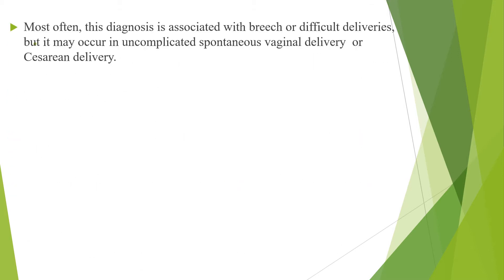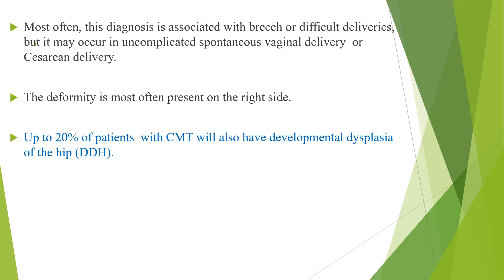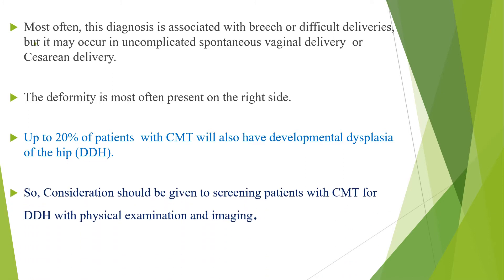Most often, this diagnosis is associated with breech or difficult deliveries, but might occur in uncomplicated spontaneous vaginal delivery or caesarean delivery. The deformity is most often present on the right side, and up to 20% of patients with congenital muscular torticollis will also have developmental dysplasia of the hip. Consideration should be given to screening these patients for developmental dysplasia of the hip with physical examination and imaging.